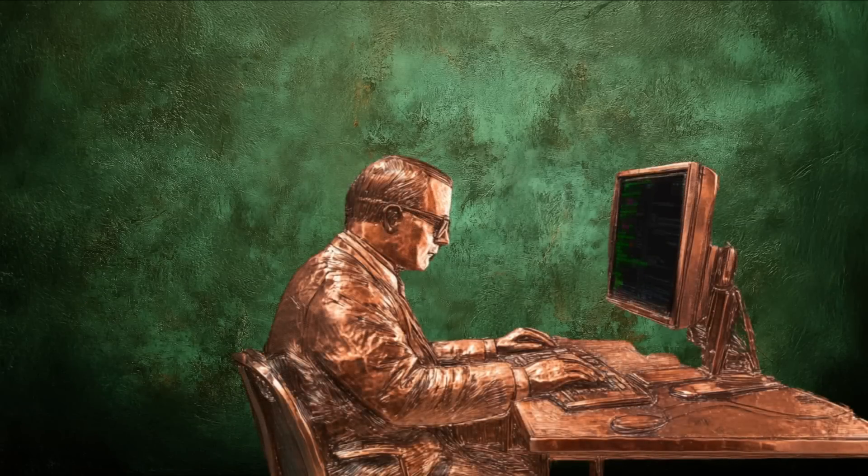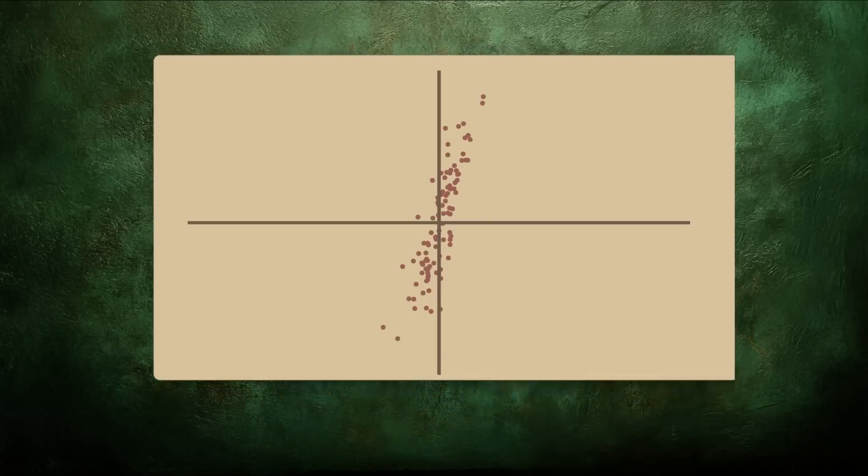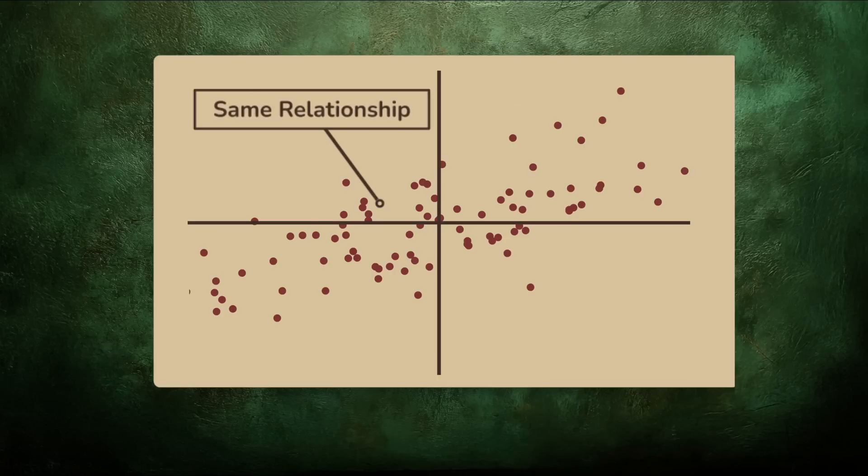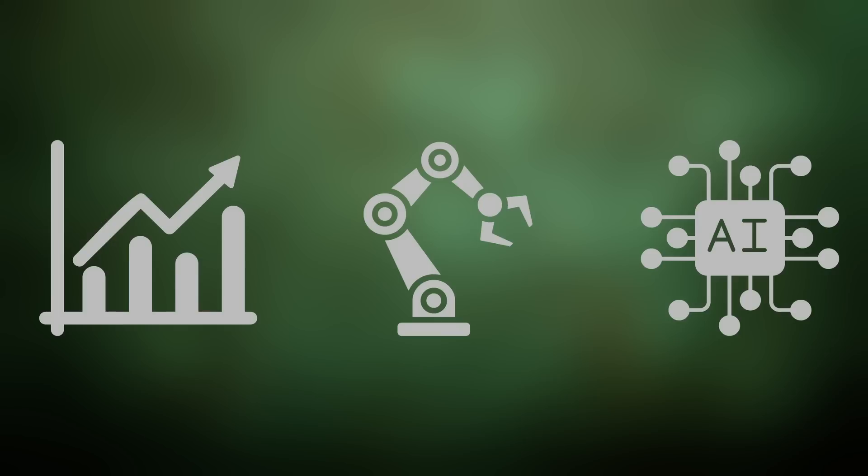While covariance isn't ideal for comparing across data sets, it continues to play a key role in data analysis. It's true that covariance values shift with scale, but the relationships they reveal don't disappear. Covariance isn't simply a mathematical curiosity. Whether you're analyzing markets, machines, or models, covariance quietly powers some of the most important decisions in data science.